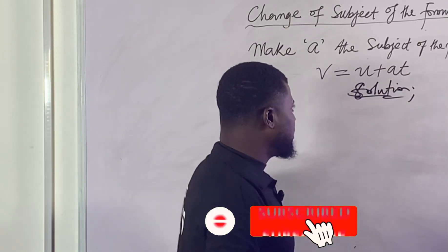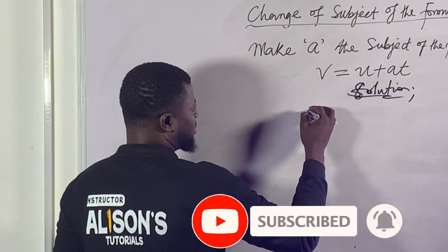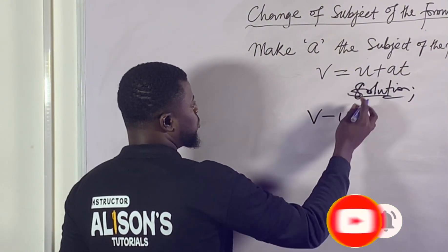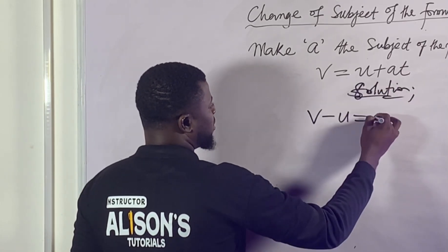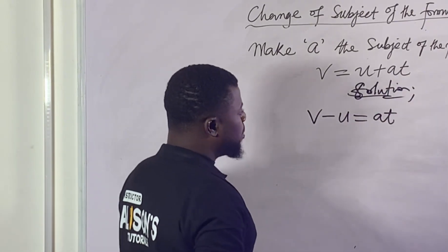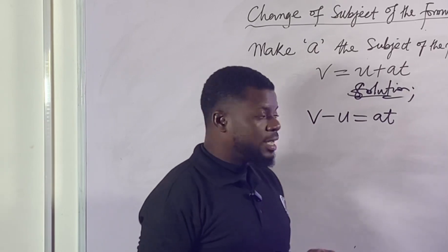So we'll be left with 'at'. What we need to do first is V minus U. Keep in mind when it crosses it changes. This equals 'at'. We're making progress.